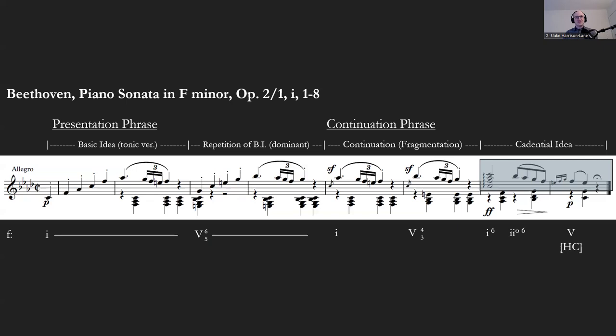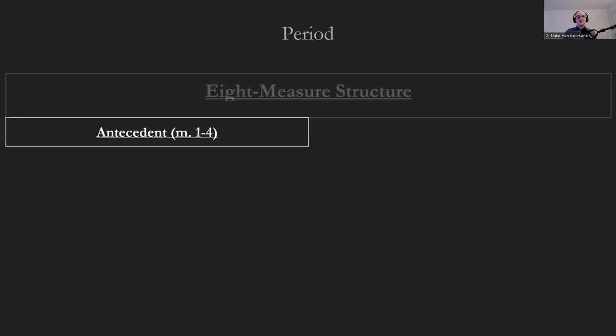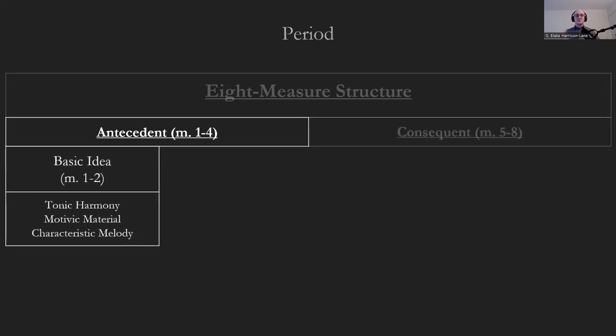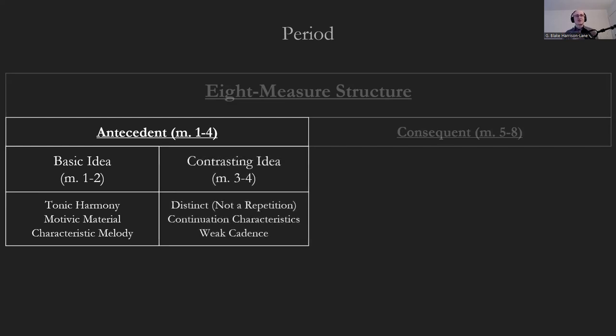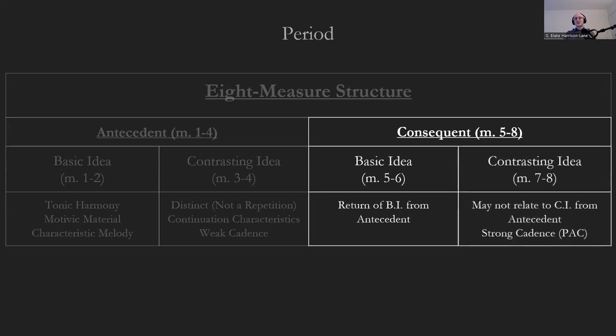The period is the other type of phrase structure we're going to see a lot. It's an eight-measure structure again, and in this case we have two sections: the antecedent and the consequent. The antecedent begins similar to the sentence with our basic idea, but instead of repeating it, we have a contrasting idea. This is followed by a repetition of the basic idea and then a contrasting idea that will end in a cadence.